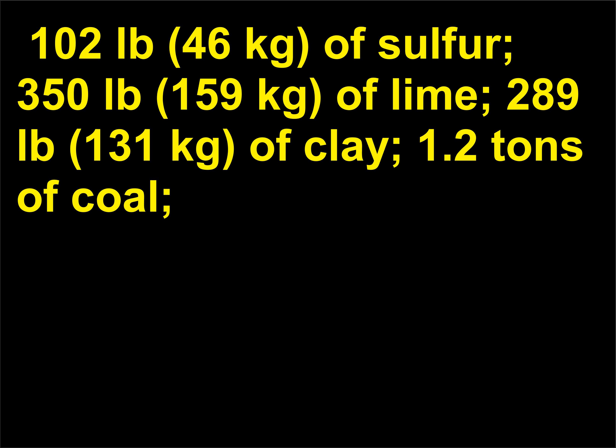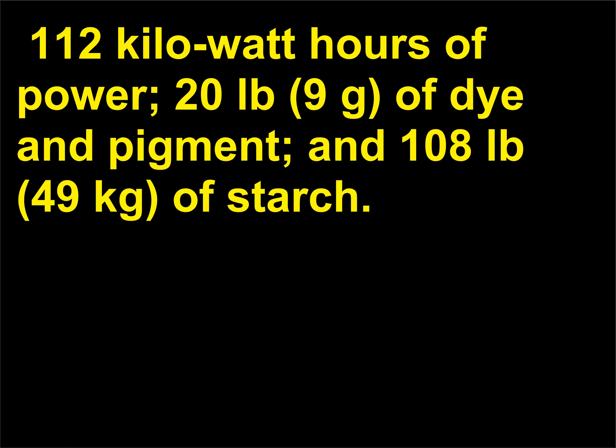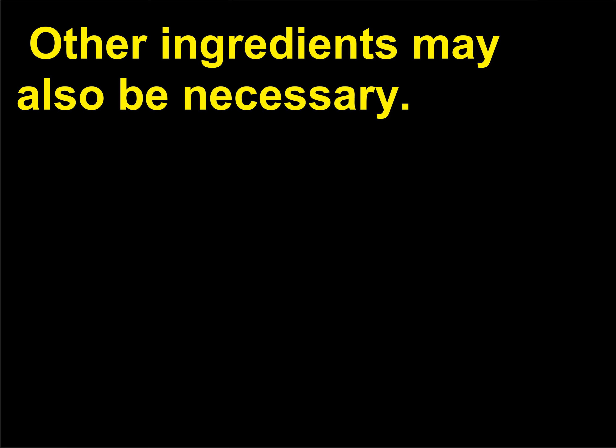Additionally, one ton of paper requires 112 kWh of power, 20 lb (9 kg) of dye and pigment, and 108 lb (49 kg) of starch. Other ingredients may also be necessary.